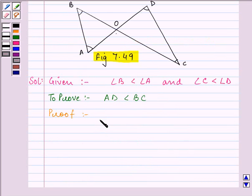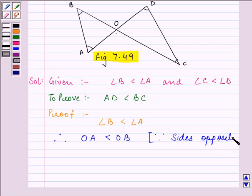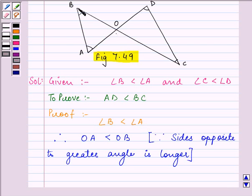Now if we are given that angle B is less than angle A, we can write that therefore OA is less than OB, giving the reason that sides opposite to greater angle is longer. So the side opposite to the greater angle, that is angle A, is OB. Therefore OB is greater than OA.